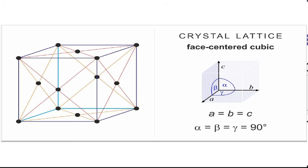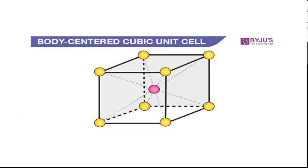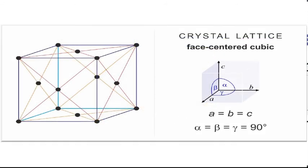To recap: in body centered cubic there is an atom only at the center, while in face centered cubic there are atoms at the six face centers of the cubic lattice. This is called the face centered cubic lattice. As before, the crystallographic axes are orthogonal and the structure is cubic in nature. That covers our discussion of the different systems of cubic lattice. Thank you.